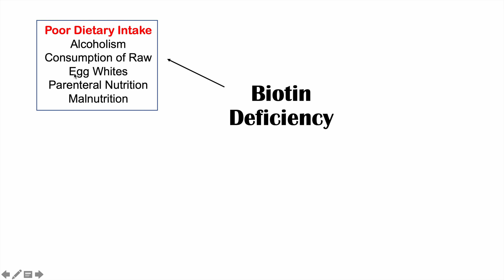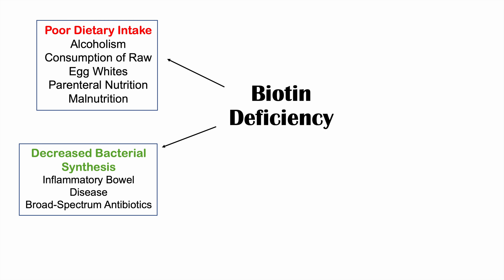Consumption of raw egg whites can also lead to biotin deficiency, as avidin prevents biotin absorption. Parenteral nutrition — getting nutrients through IV lines — can also cause a biotin deficiency, as can malnutrition in general. Another category is decreased bacterial synthesis. Gut microbes are a significant source of biotin, so inflammatory bowel disease or broad-spectrum antibiotics — which can wipe out gut microbes — can lead to a potential biotin deficiency.